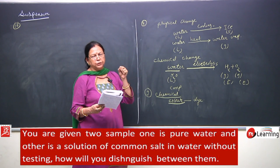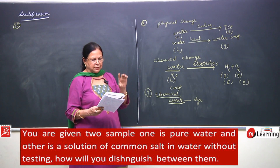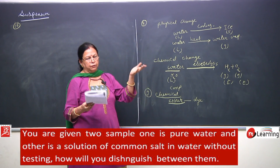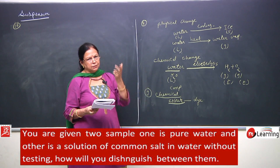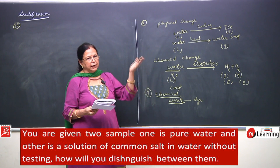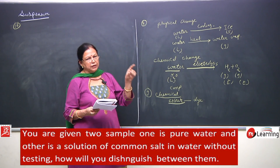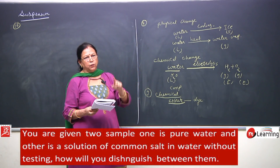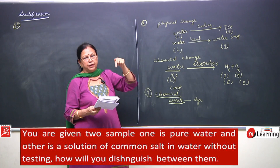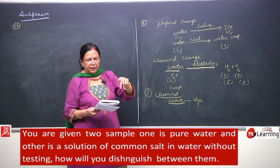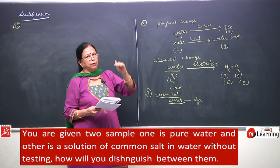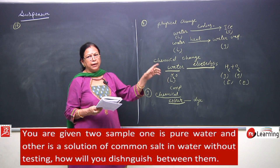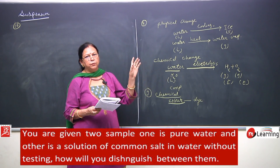A pure substance boils at a fixed temperature. So you will heat both samples. The one that boils exactly at 100 degrees is pure water. The one with salt — because it contains an impurity — will boil at a higher temperature. That is the salt solution. This is how you can distinguish between them.